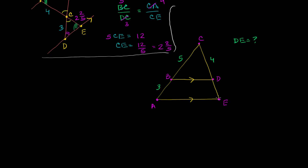In this second problem, we need to figure out what DE is. Once again we have two parallel lines, so corresponding angles are congruent. This angle is congruent to that angle, and this angle is congruent to that angle, because you can view these as transversals. Also, both triangles CBD and CAE share the same angle at the top, so all three corresponding angles of the two triangles are congruent to each other.